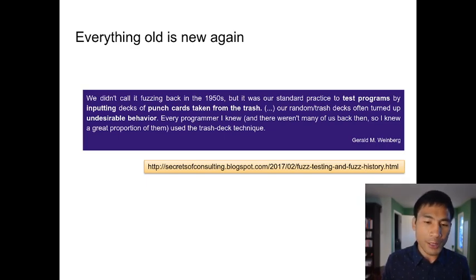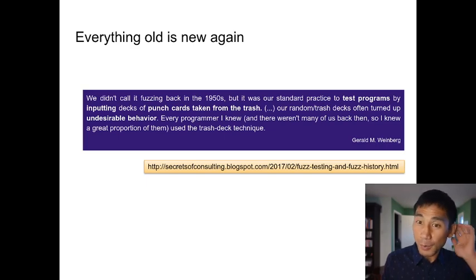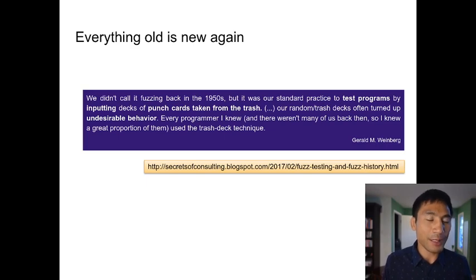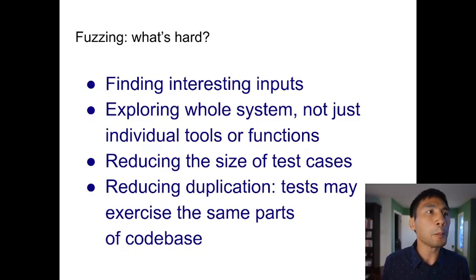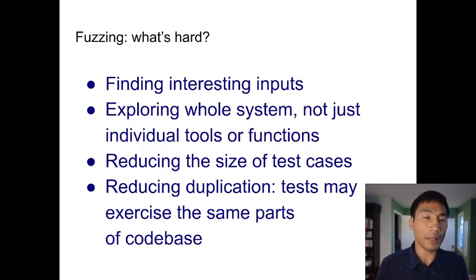The situation was different then too, because you didn't have to face attacks from the internet — your code was running in a trusted environment. And there was also this physical artifact, the punch card, which was easier to use than when we moved away from it. But let's talk about the problem of fuzzing and, in particular, how we do it now.